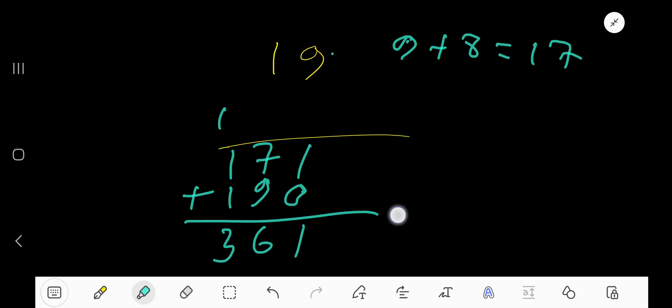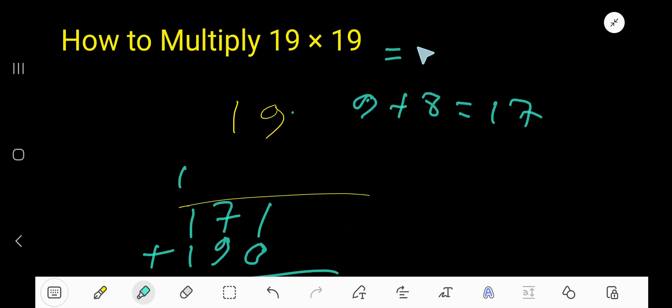1, 2, 3. 361. 19 times 19, 361 is the answer.